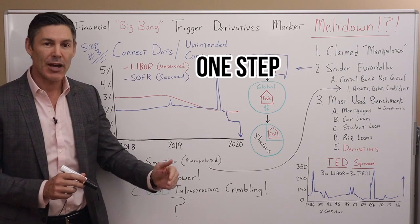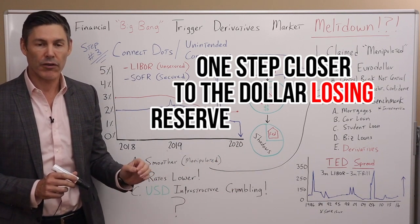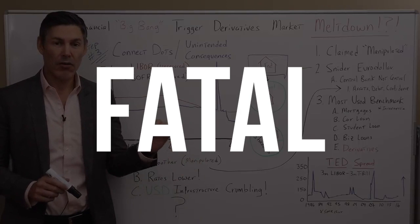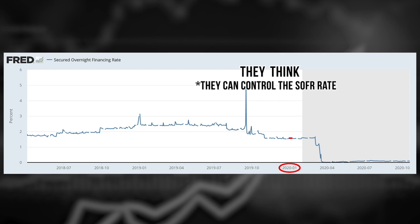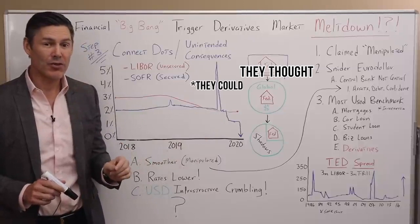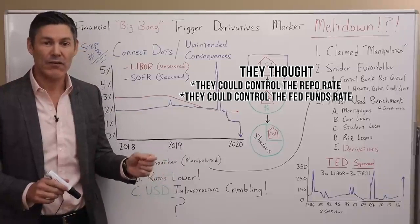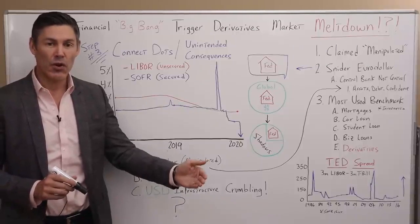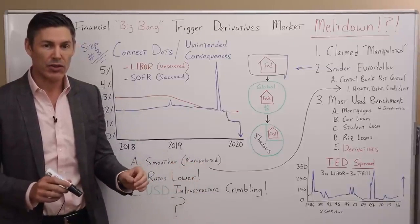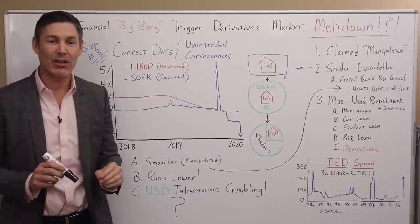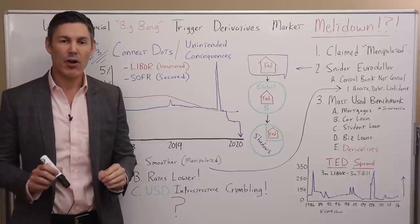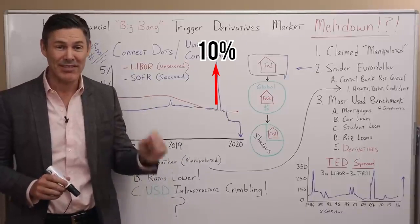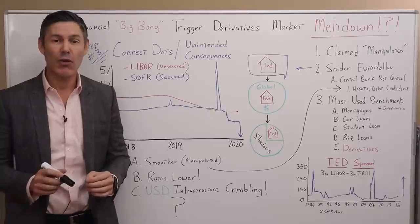This is just one step closer to the dollar losing reserve currency status. But I think the Fed and the central planners could have made an even bigger fatal flaw. In their minds, they think they can control this SOFR rate. They thought they could control the repo rate. They thought they could control the Fed funds rate. But we found out last September that's not true at all. Although they've been trying to control it to a greater degree in 2020, it doesn't mean they can't lose control of it in the future.